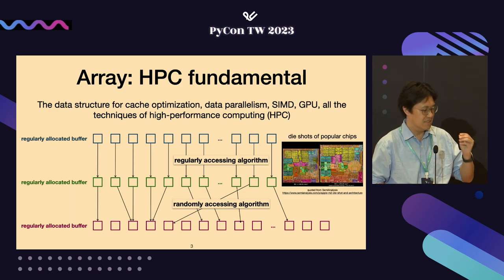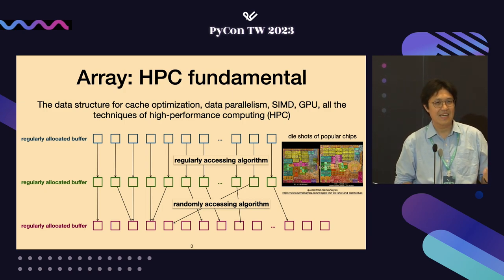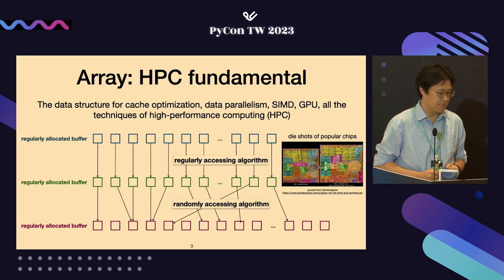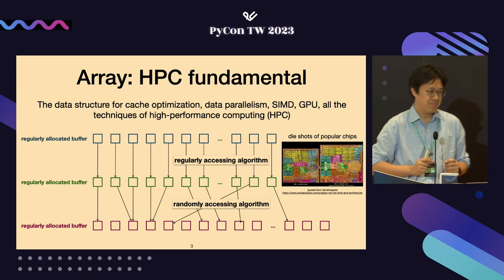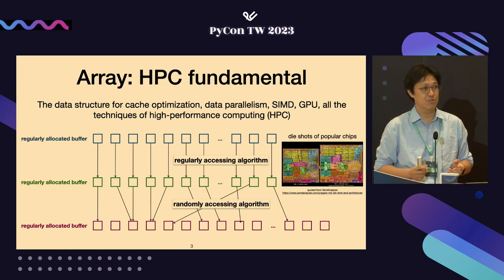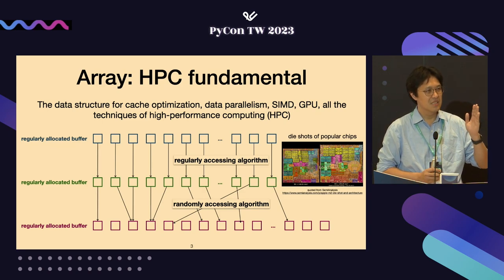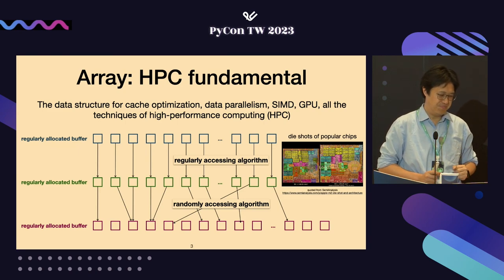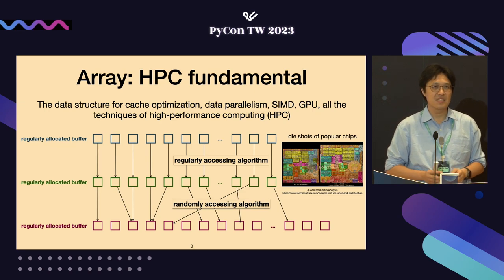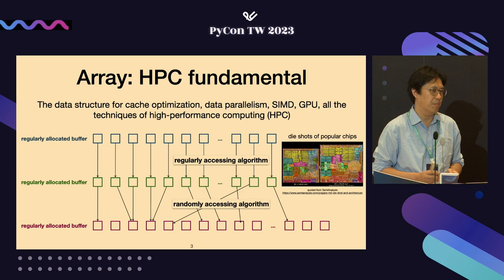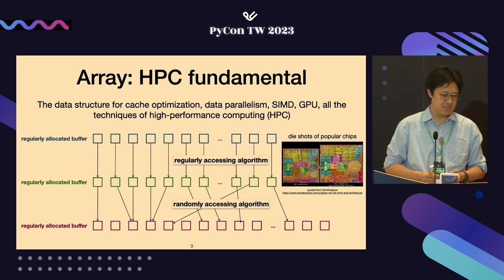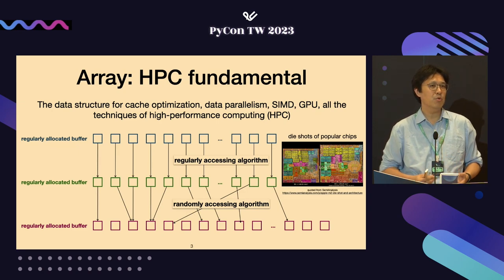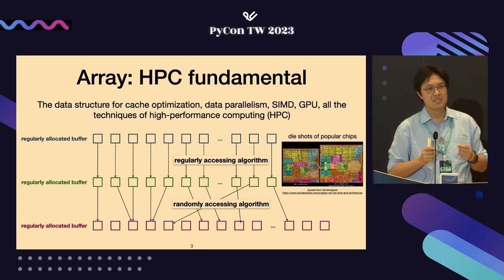The matter is to use arrays. This is a construct that is the fundamental of high performance computing — the data structure. Array is a data structure so simple that sometimes we probably shouldn't even call it a data structure, because all it takes is a regular ordering of data in memory. But this data structure is the foundation for all kinds of speed-up techniques, including cache, parallelism, single instruction multiple data or vector processing, GPU, and so on. Almost everything we want to speed up is built upon these array data structures.